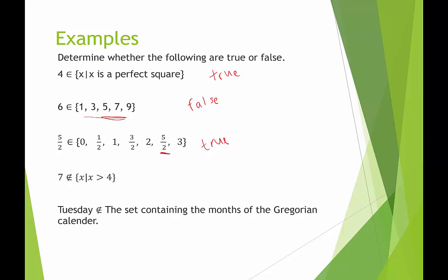Next it says 7 is not an element of the set containing the numbers greater than 4, but 7 is greater than 4, so 7 is an element of the set. This says it's not, so this would be a false statement.